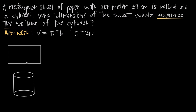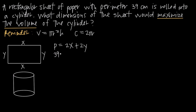Let's call the dimensions of this rectangle x and y, so the dimensions are x by y. We know the perimeter is 39 centimeters. With a rectangle, opposite sides are equal, so the perimeter is 2x + 2y. Therefore: 39 = 2x + 2y.